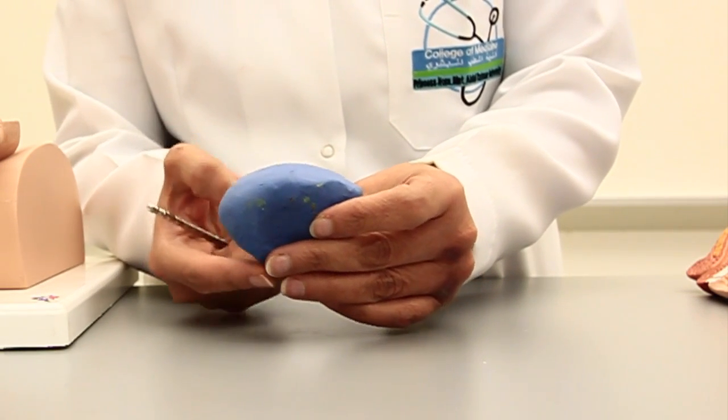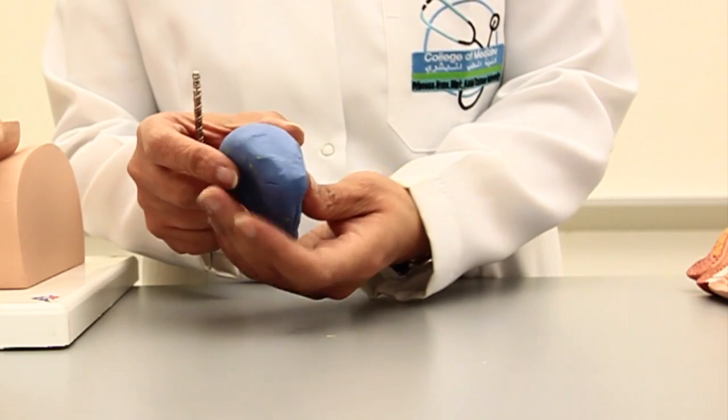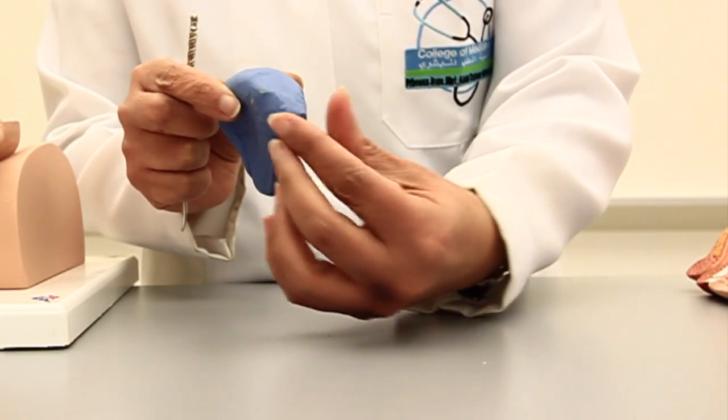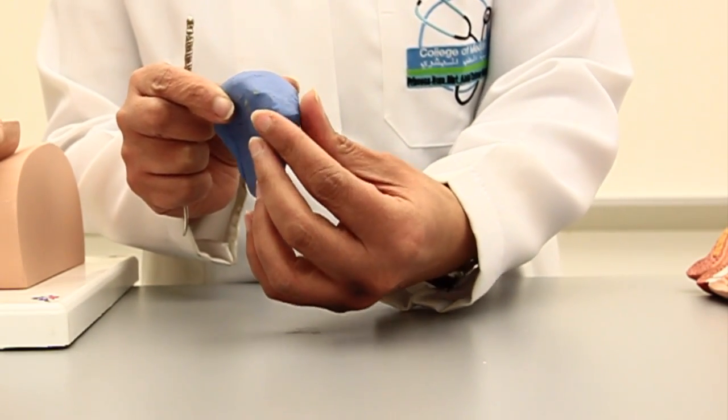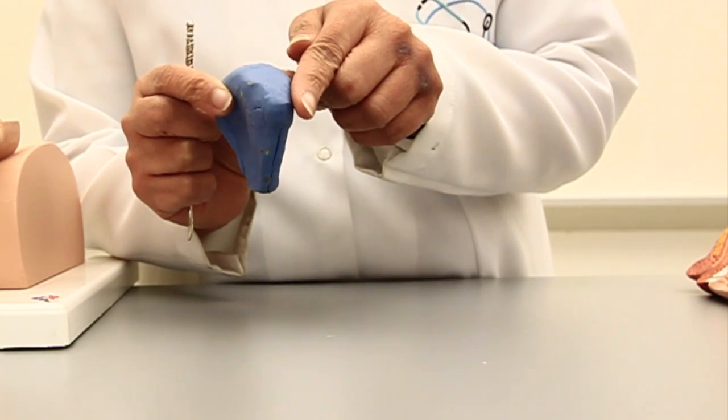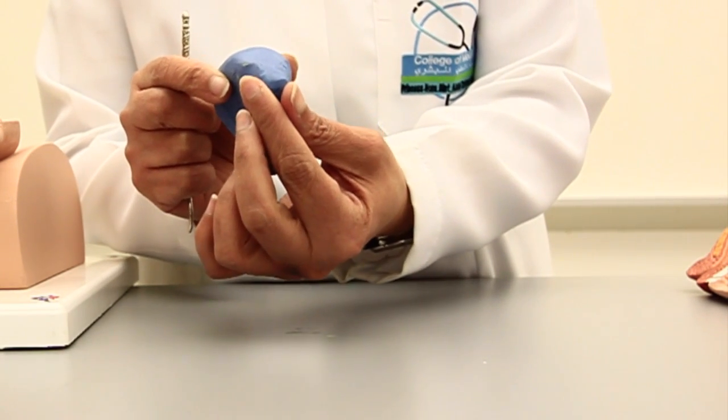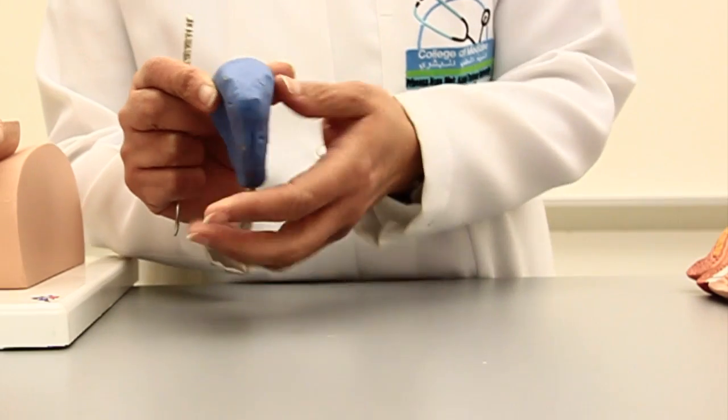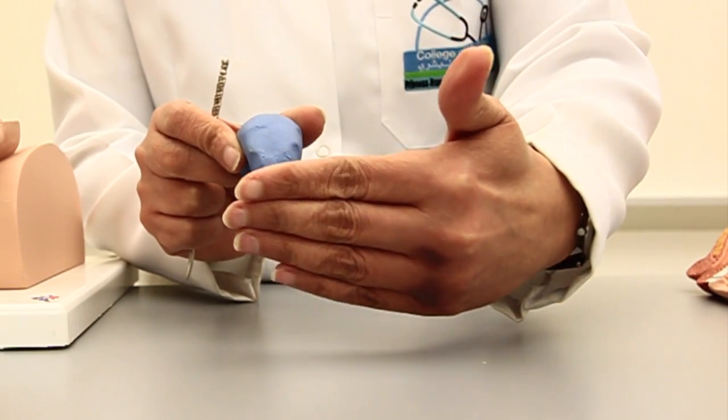If we have a base, then we must be having an apex. So this pointy part of the bladder, which is like a pointed nipple, is the apex of the bladder. That is lying just behind the symphysis pubis.